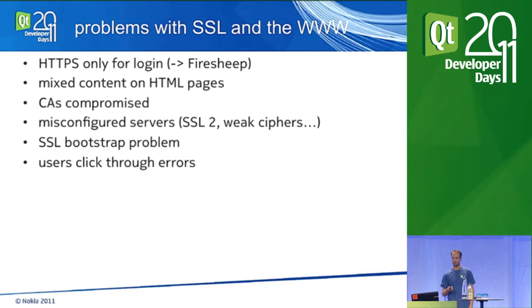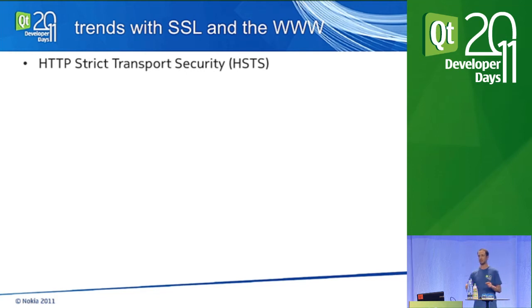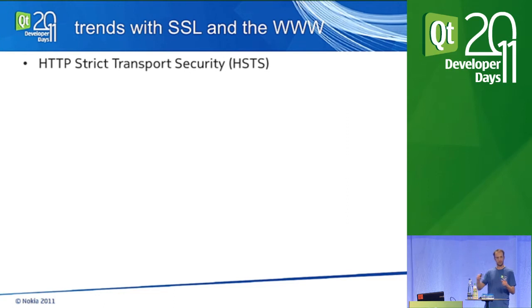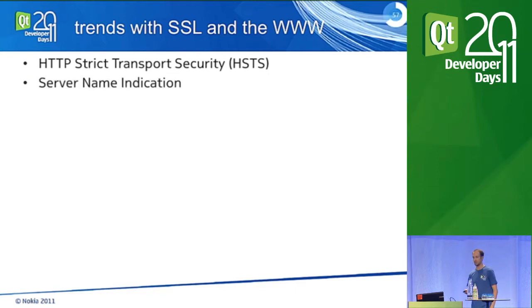Let's look at some trends that try to mitigate these problems. First, HTTP Strict Transport Security (HSTS): this solves the bootstrap problem. When you connect to a site, the server sends a special HTTP header saying 'please connect via SSL next time' along with a time value. The browser then automatically switches to SSL for subsequent requests — so you don't have the bootstrap problem anymore. It's enabled in recent releases of Chrome and Firefox.